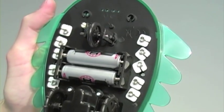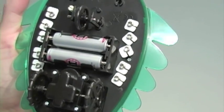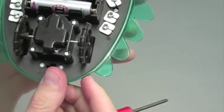For the last step, simply install two double A batteries and then your robot is complete.